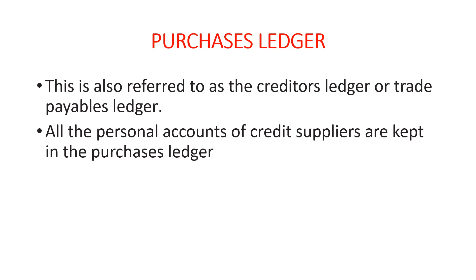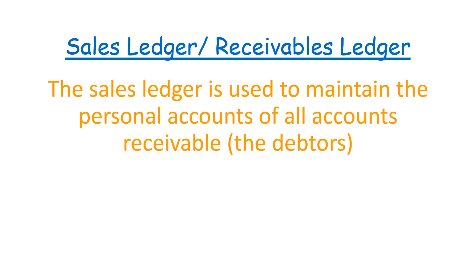If you own a shop and one of your customers comes to buy but they promise to pay at a later date, then in your books of accounts, that customer is considered a debtor. Debtors are considered assets and so are also considered accounts receivable.